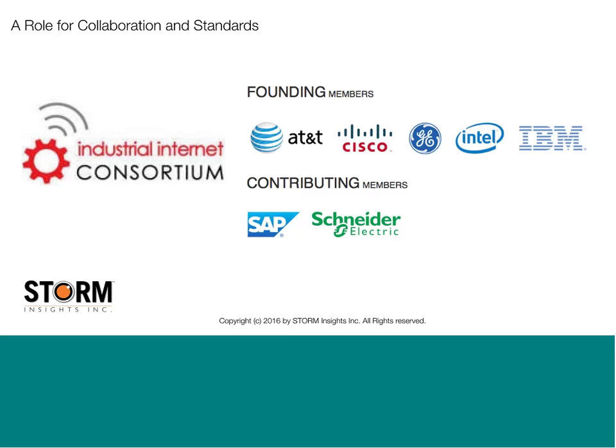The Industrial Internet Consortium today has a couple of hundred companies. I would encourage you to take a look — one of the reasons I think that's important is if you're looking at some of the newer vendors, some of the smaller vendors, the emerging vendors, it's good to see if they're actually supporting or participating in some of these organizations.